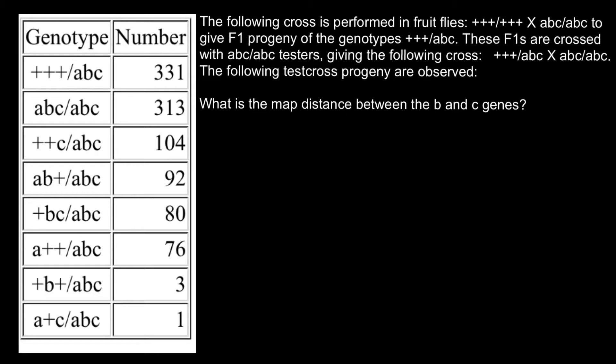Hello and welcome to Nikolai's genetics lessons. Today's problem is the following cross performed in fruit flies, where the genotypes of the cross give F1 progeny of certain genotypes. This F1 is crossed with testers of a specific genotype. The following test cross progeny are observed in a table. What is the map distance between gene B and C?